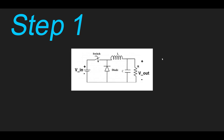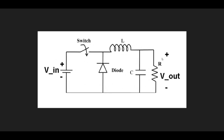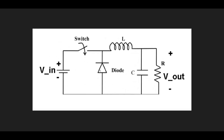In this video we will study the closed-loop control of a buck converter using output voltage. This is the typical circuit diagram of a buck converter. This is the input voltage, this is the switch — it can be an IGBT or MOSFET — this is the diode, inductor, capacitor, and this is the load. To start with, we will first decide the specifications.